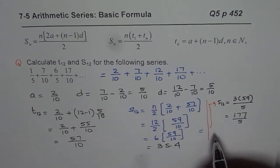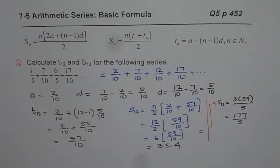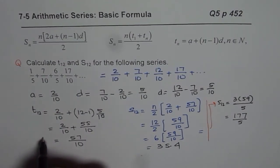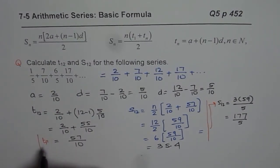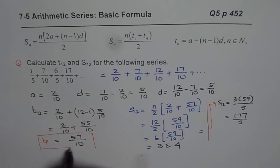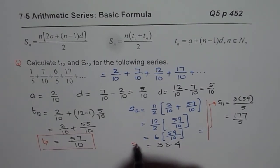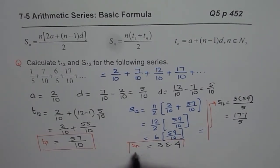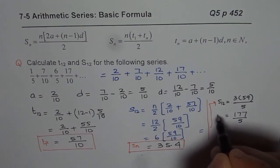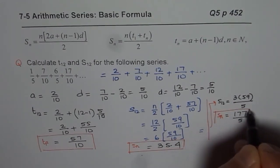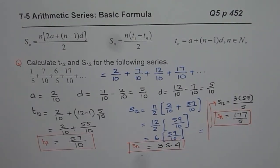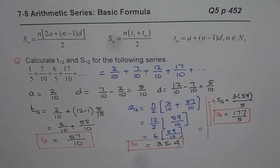So what we get here is that the 12th term T12 is 57 over 10, and S12 you can write in decimals or in fractions, as you wish. So that is how you can solve such questions. I hope that helps. Thank you.